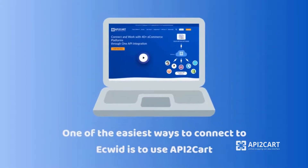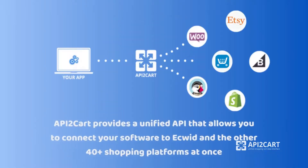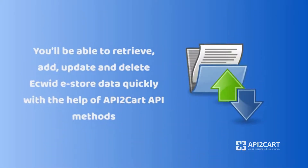One of the easiest ways to connect to Ecwid is to use API2Cart. API2Cart provides a unified API that allows you to connect your software to Ecwid and 40-plus other shopping platforms at once. You'll be able to retrieve, add, update, and delete Ecwid e-store data quickly with the help of API2Cart.